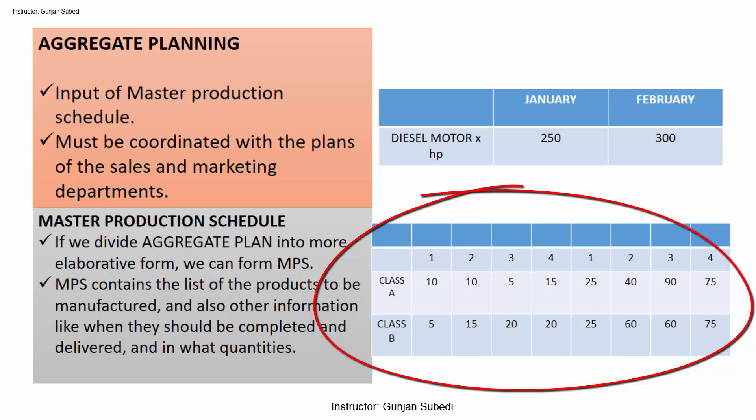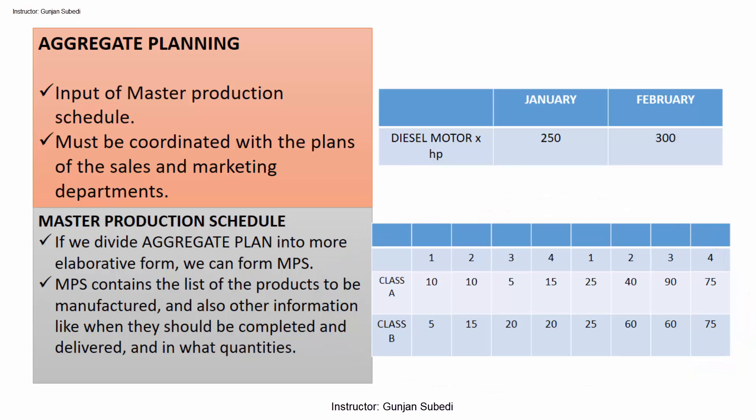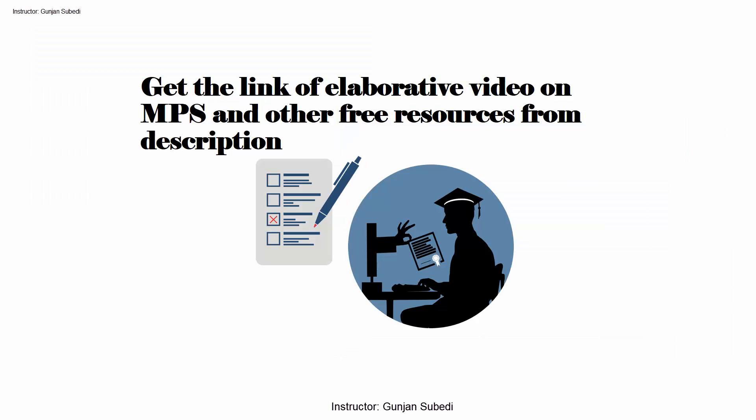The master production schedule consists of the list of products to be manufactured and also other information like when they should be completed and delivered, and in what quantities. In summary, the master production schedule takes the aggregate planning as a target to be achieved, and in order to facilitate the planning and manufacturing process, we break that into more manageable units in the master production schedule.